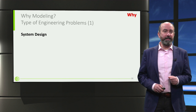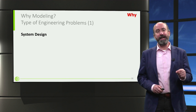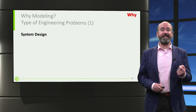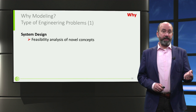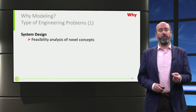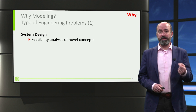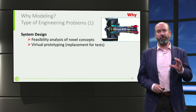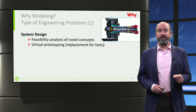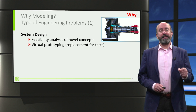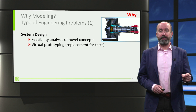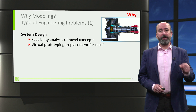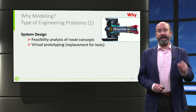Now, why do we do modelling? Let's define some types of engineering problems. We do it when we need to design a system — it is the first thing we do when we want to analyse the feasibility of a novel concept. The art of modelling has reached an extremely sophisticated level. Nowadays, in some areas, one can claim to develop a virtual prototype, avoiding the need to actually build hardware, but relying on a computer for very accurate predictions.